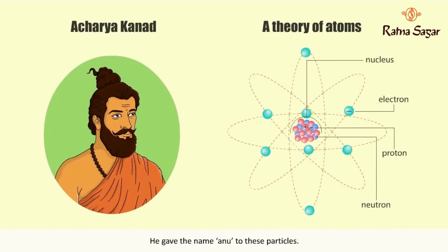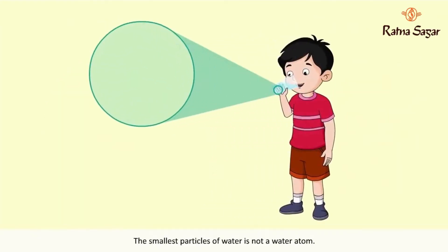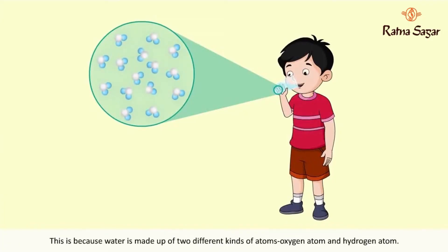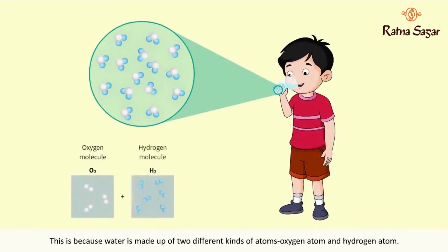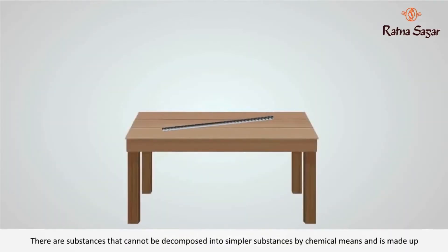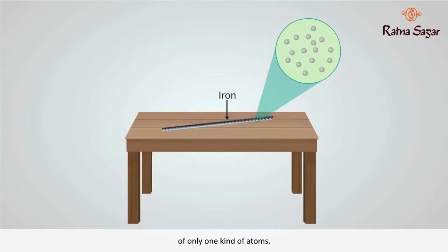He gave the name Anu to these particles. The smallest particle of water is not a water atom, because water is made up of two different kinds of atoms: oxygen and hydrogen. These form one molecule of water. Substances that cannot be decomposed into simpler substances by chemical means and are made up of only one kind of atom are known as elements.